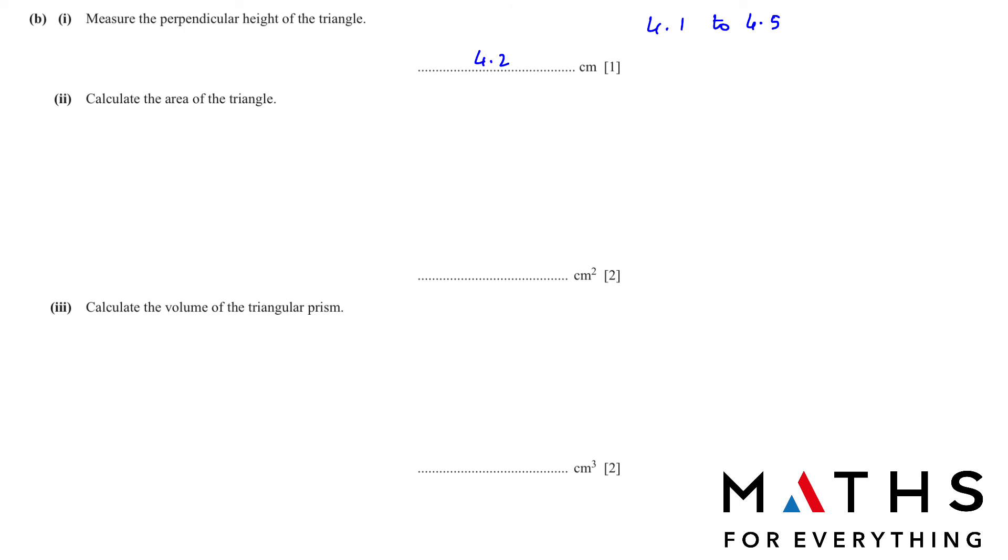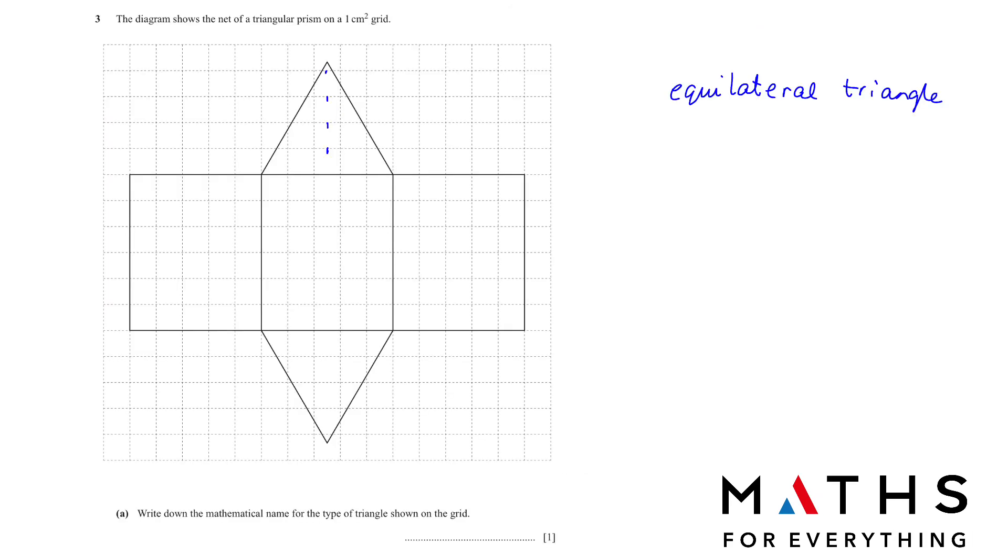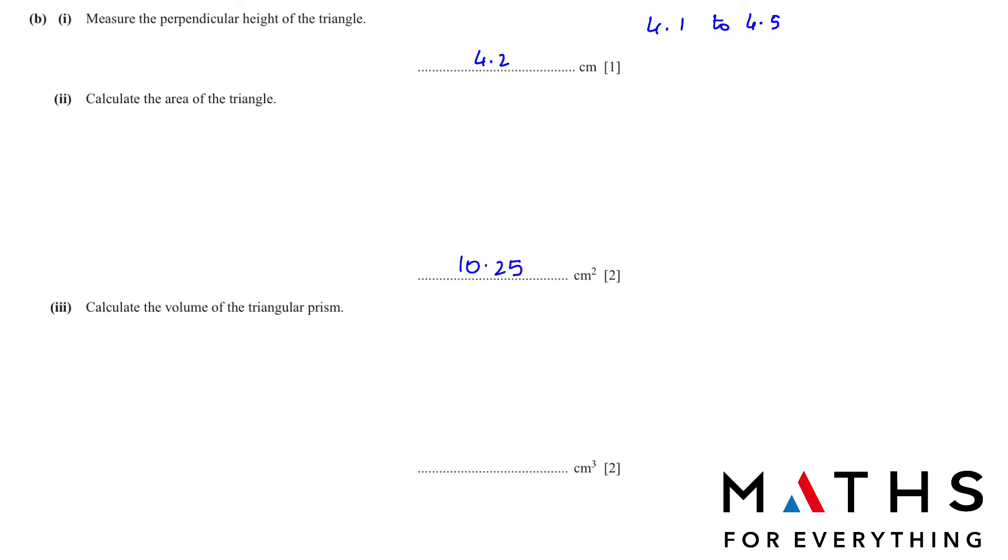Calculate the area of the triangle B2. For the area of the triangle, we need to write the formula half times base times height. Our base is 1, 2, 3, 4, 5. We already counted that before. And height is 4.2. Let's see what we get. We will get the answer 10.5. Any answer between 10.25 to 11.25 is accepted. So area is 10.5 square centimeter.